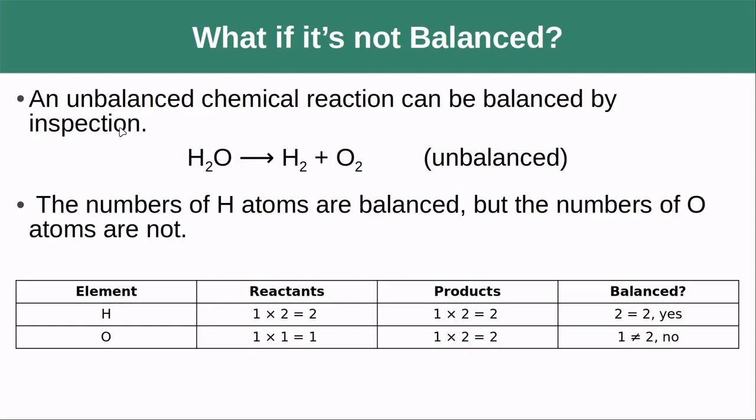So how do we go about balancing? The easiest way is actually by inspection. There are some numerical methods for doing it, but they're pretty kind of gross and hard, and you probably wouldn't want to do that. Really, it's easier to think of them kind of like a puzzle, like a Sudoku or something like that. In this case, we have H2O goes to hydrogen plus oxygen molecules, and we're going to start by counting up the number of each element on either side. So we have two H2s on the reactant side, we have two H2s on the product side, and that's good. Now we're balanced, so our hydrogen is balanced in this case.